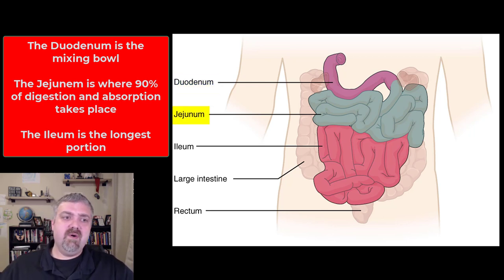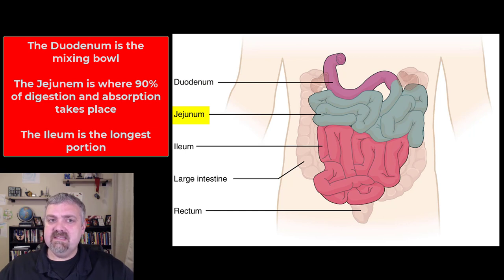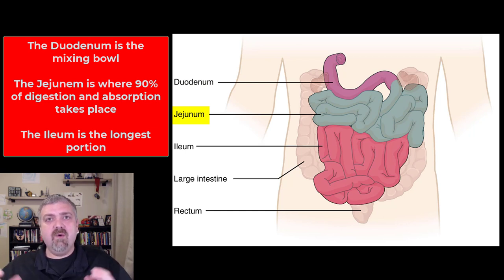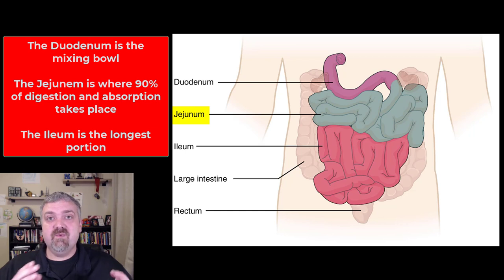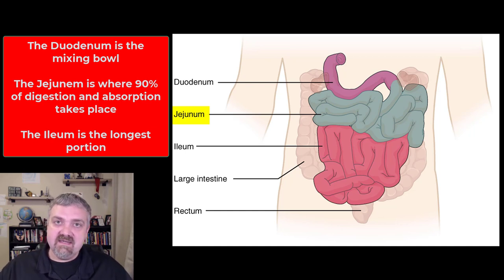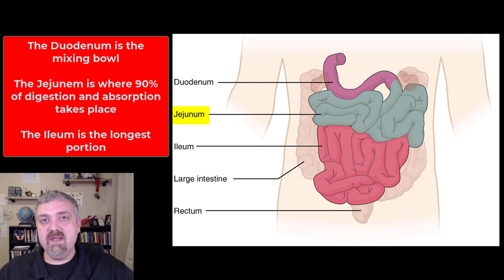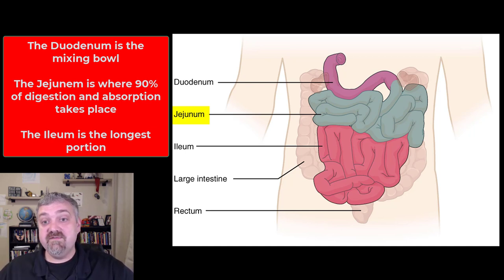The jejunum is the most important part of the small intestine. It is about three feet long, and this is where we say the small intestine handles 80 to 90 percent of digestion and absorption. You could say that the jejunum is where 80 to 90 percent of that takes place. So the most important portion of an organ in your body for digestion and absorption of food is the jejunum.